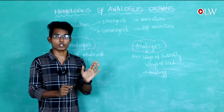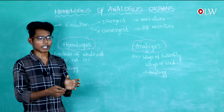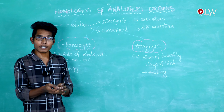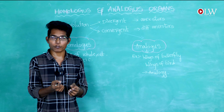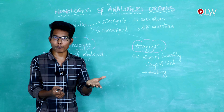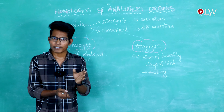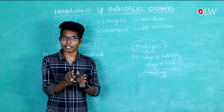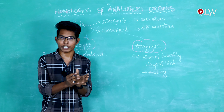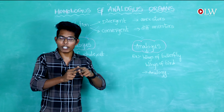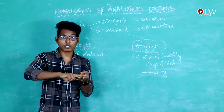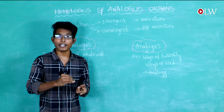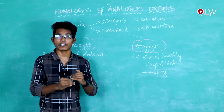Convergent evolution can be illustrated with a snake and an earthworm. When we observe these two, their morphological structure appears similar — one is very long and one is shorter — and their evolutionary changes look similar externally, yet they are entirely different organisms occupying similar habitats and niches.